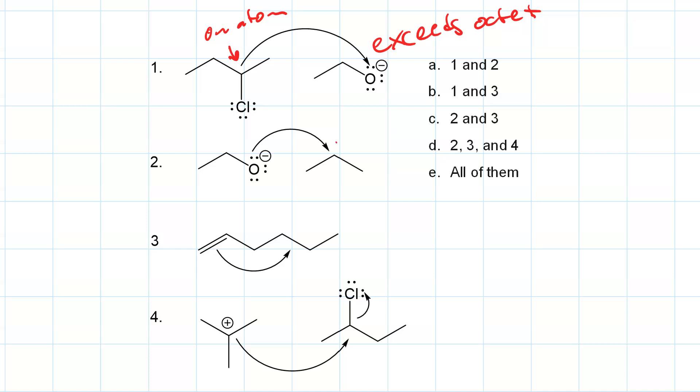Curved arrow number two exceeds an octet. Curved arrow number three exceeds the octets for both of those.